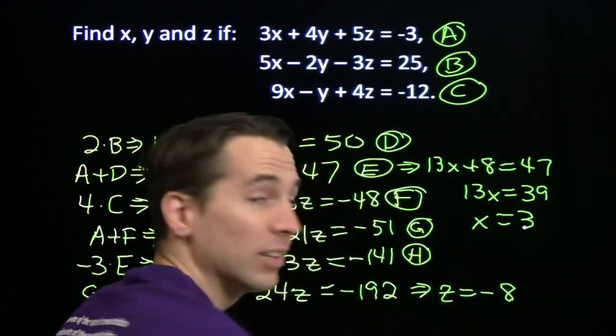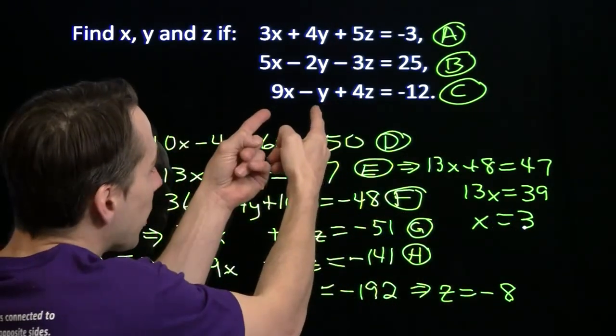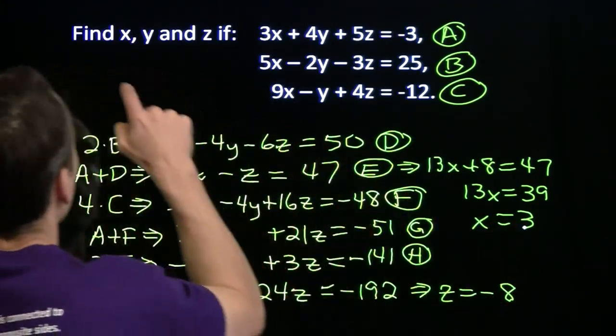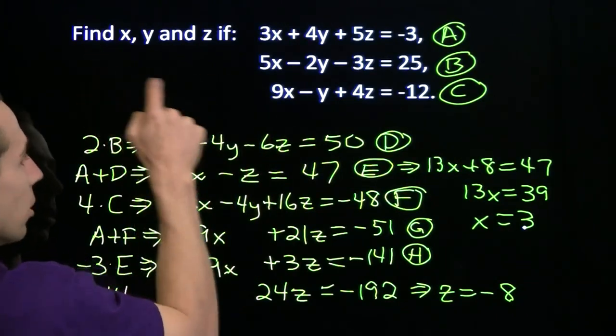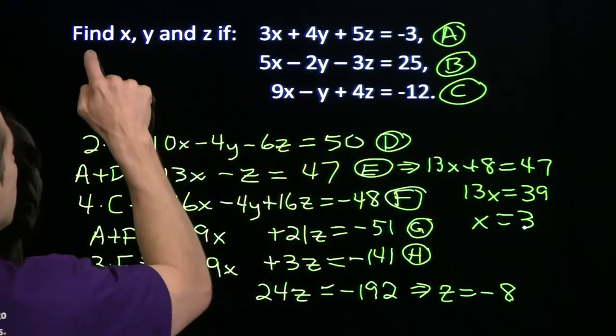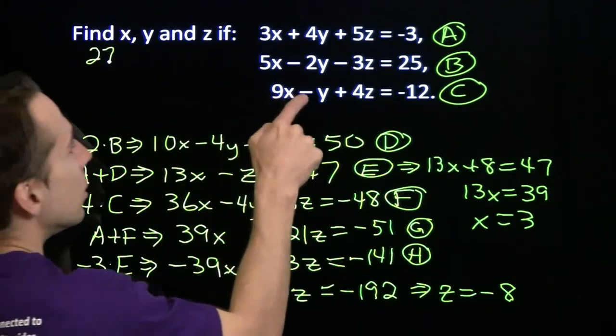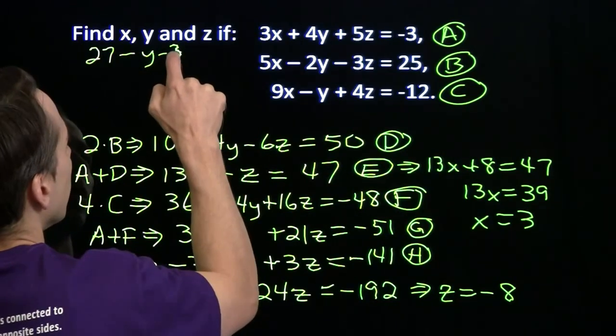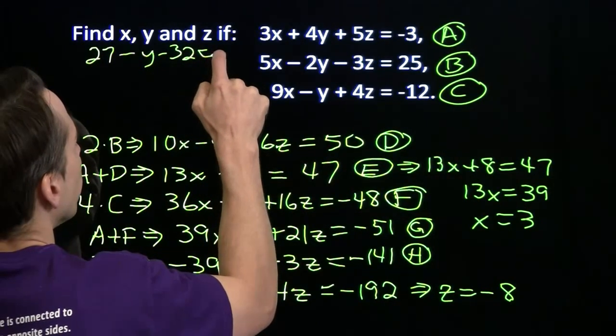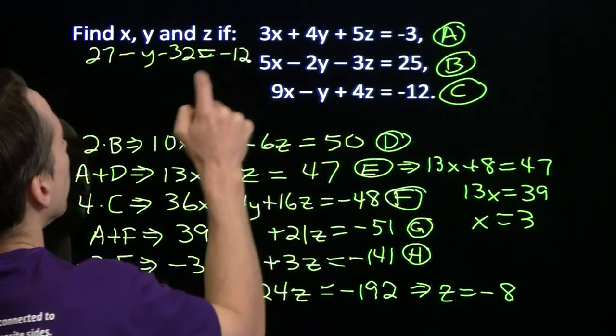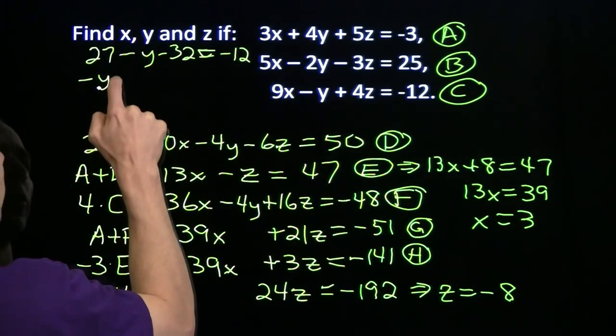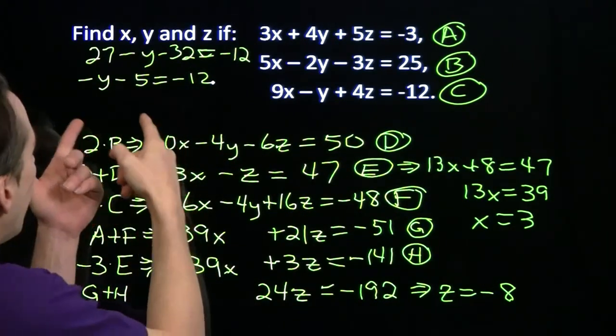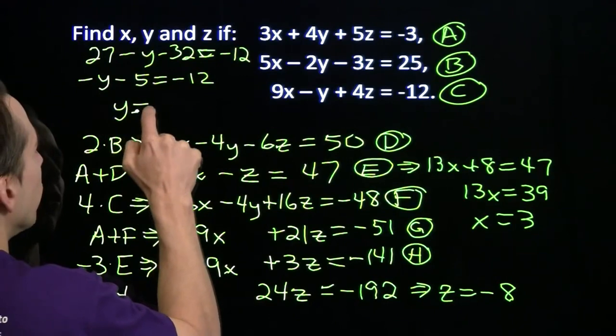So now I've got x, I've got z, now all we have to do is figure out y. I'm going to come back up here and use this equation to figure out what y is. Putting x and z in: 3 times 9 gives us 27 minus y plus 4 times the negative 8 is minus 32, equals negative 12. Simplify this: minus y minus 5 is negative 12, and that gives us minus y is minus 7, so y is 7.